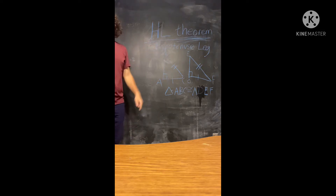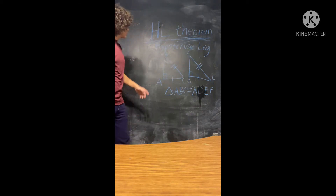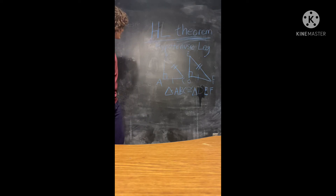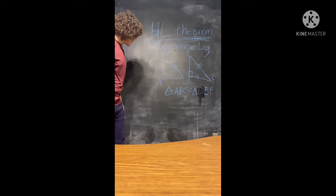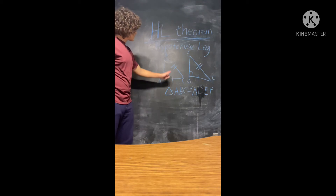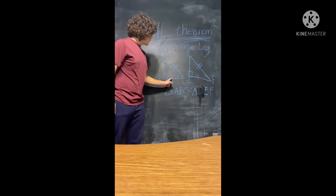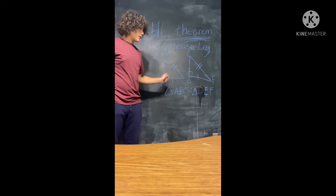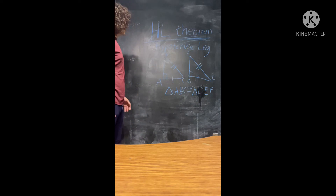H-L theorem — like A-A-S, this is a theorem. H-L stands for hypotenuse-leg, referring to a right triangle. H-L can only be used when talking about a right triangle. What H-L states is that if the hypotenuses of two triangles match, and a corresponding leg matches, and of course there is a right angle that is congruent, then those triangles are congruent.